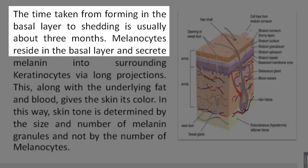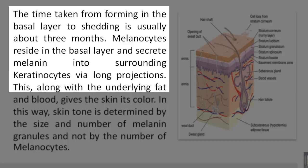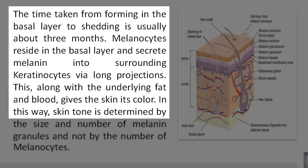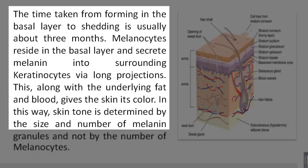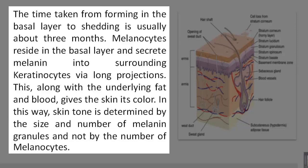The time taken from forming in the basal layer to shedding is usually about three months. Melanocytes reside in the basal layer and secrete melanin into surrounding keratinocytes via long projections. This, along with the underlying fat and blood, gives the skin its color. In this way, skin tone is determined by the size and number of melanin granules and not by the number of melanocytes.